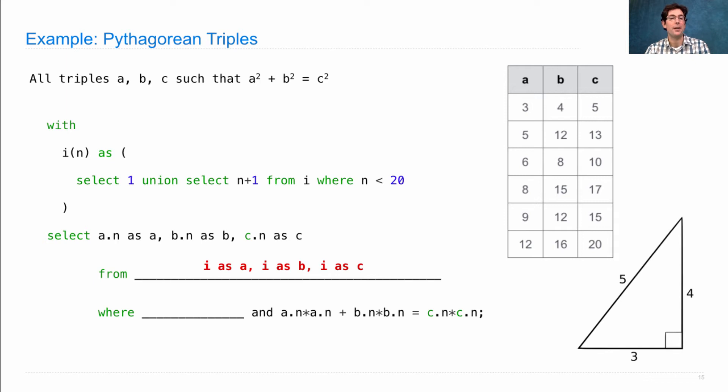We need to join together three different copies of the i table because we need to be able to talk about three integers at the same time. And then if we look at the output, we'll see that 3, 4, 5 is in there, but 4, 3, 5 is not in there. So we need some specification that a.n is less than b.n. Less than or equal would also work. There are no Pythagorean triples that have equal a and b.